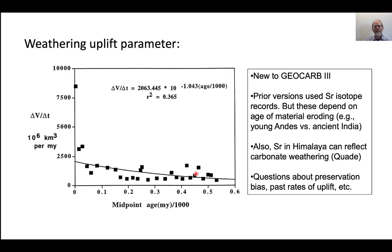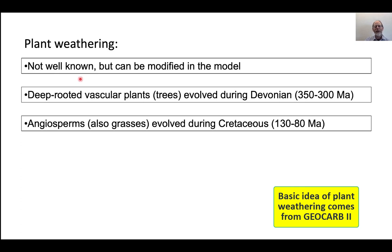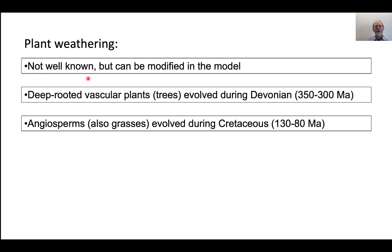There are all kinds of questions about what the uplift rates are and whether they increase through time, or whether this is just a record bias — but this is how they try to address it. For plant weathering, they don't know that very well, but it's something they modify. The important thing is that trees evolved during the Devonian, so that changes weathering characteristics around 350 million years ago. Then angiosperms — like maple trees and grasses — evolved during the Cretaceous, and this really changes the character of weathering on the surface of the Earth. So that's another factor taken into account.